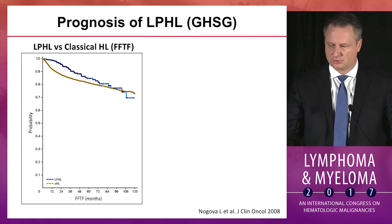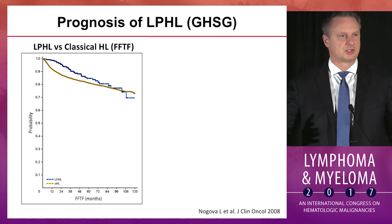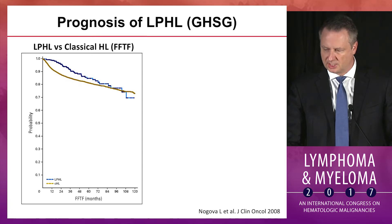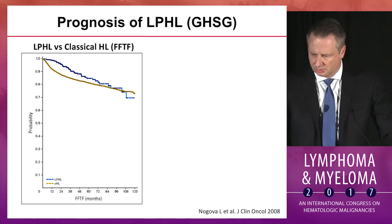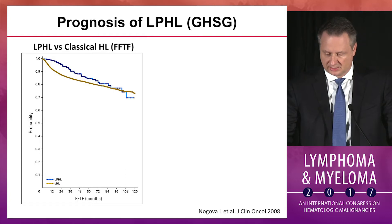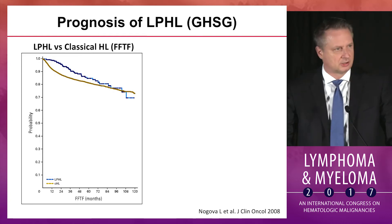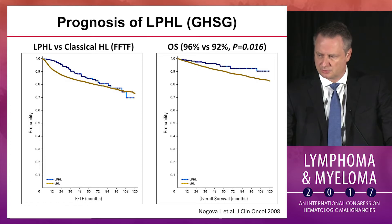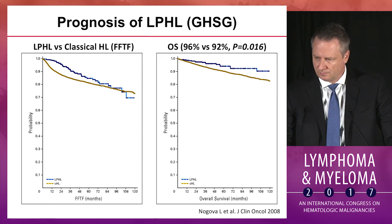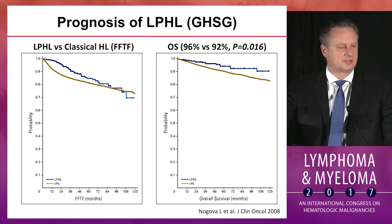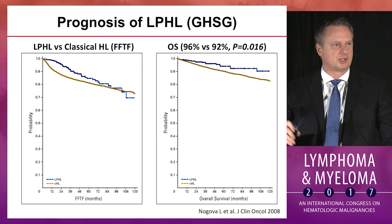For many years, many groups including the German Hodgkin Study Group lumped all Hodgkin lymphoma together including NLPHL. When they went back and pulled it out, NLPHL trended pretty similar — if not slightly better — than classical Hodgkin's in terms of freedom from treatment failure, and overall survival was even a little better. Suffice it to say, these patients were treated by classical Hodgkin's paradigms.